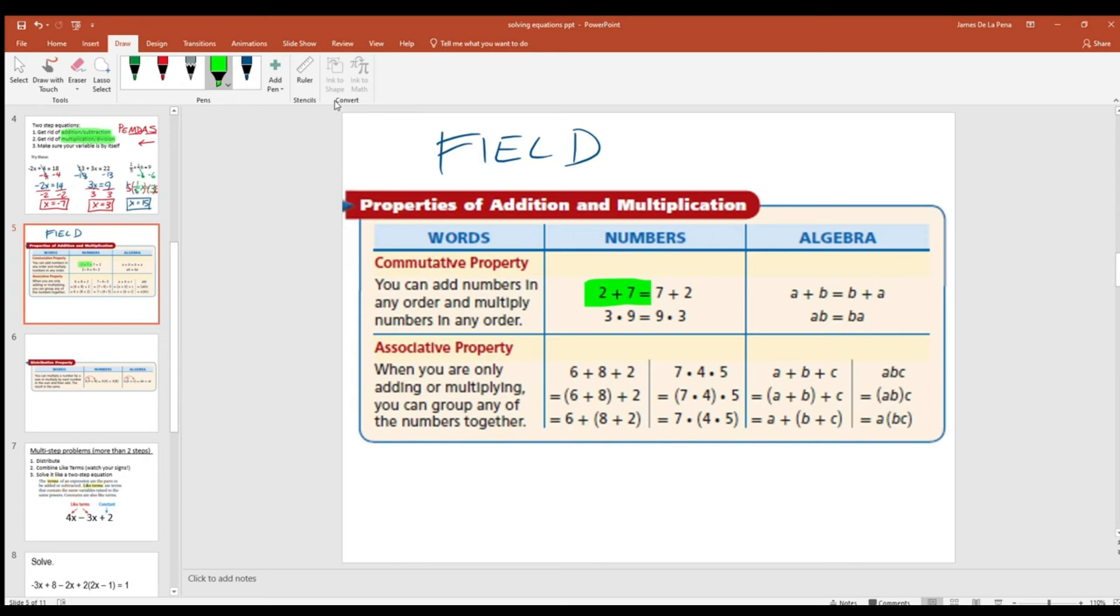We can see it in numbers and we can see it over here in this table for algebra too. If I have a plus b, I can rewrite it as b plus a. Same thing. Same value. Nothing's changed. I can do the same thing with multiplication. I can do a times b, same thing as b times a. And that's called the commutative property. And that's just going to help us when we're rearranging longer step equations.